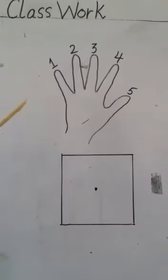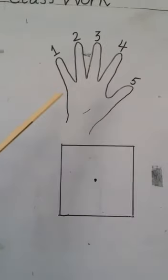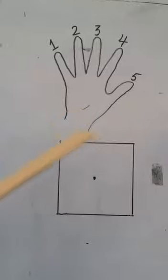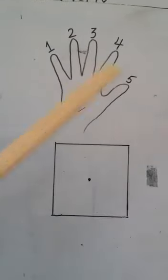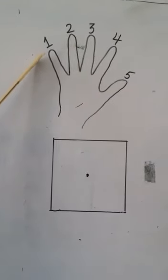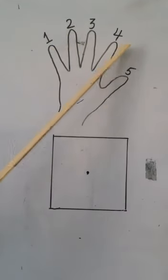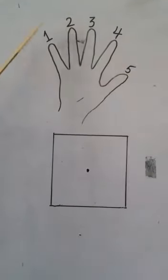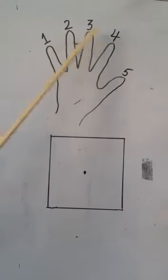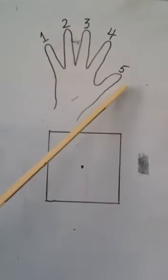This is a hand. And do you know how many fingers are in our hand? There are 5 fingers in our hand. Let's count. 1, 2, 3, 4, 5. 1, 2, 3, 4, 5.